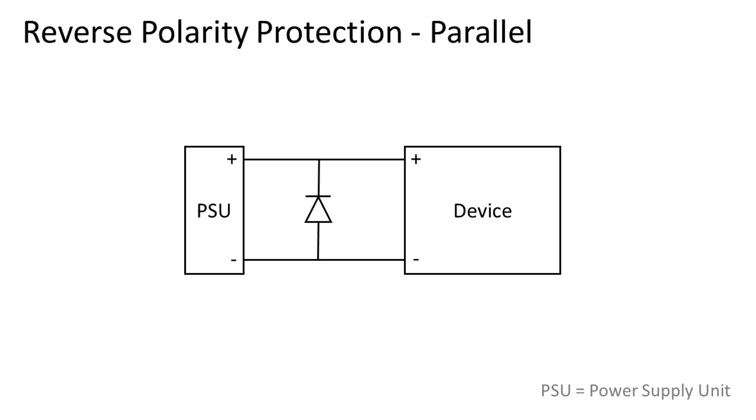The first type of protection we will discuss is a commonly used tactic of placing a diode in parallel to the input of the power supply. When the polarity is right, the diode is reverse biased and does nothing so the circuit works just fine. But when the polarity is reversed, the diode is forward biased.